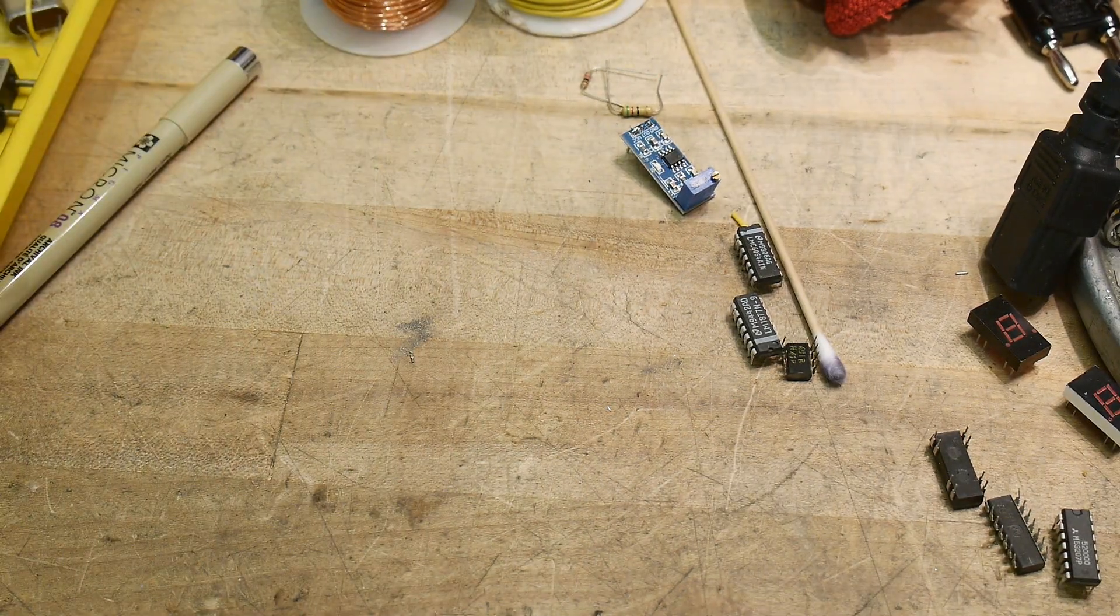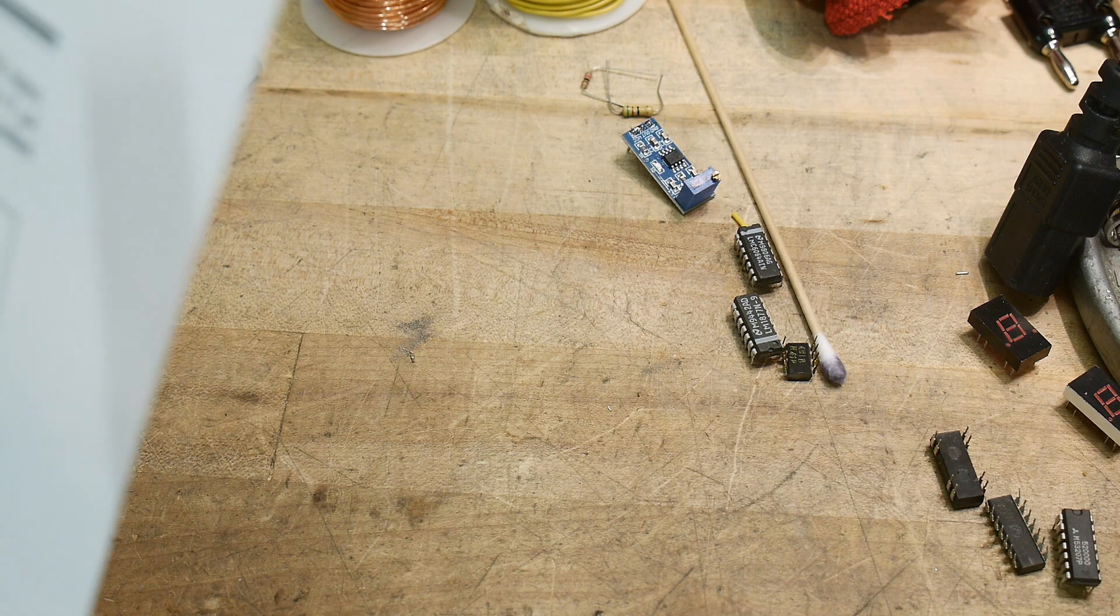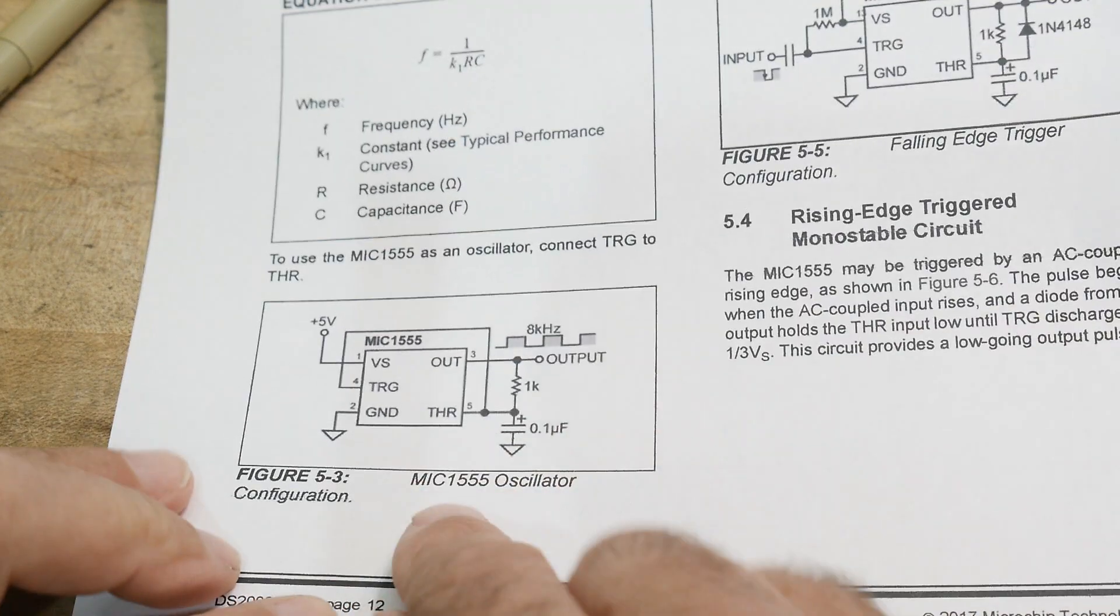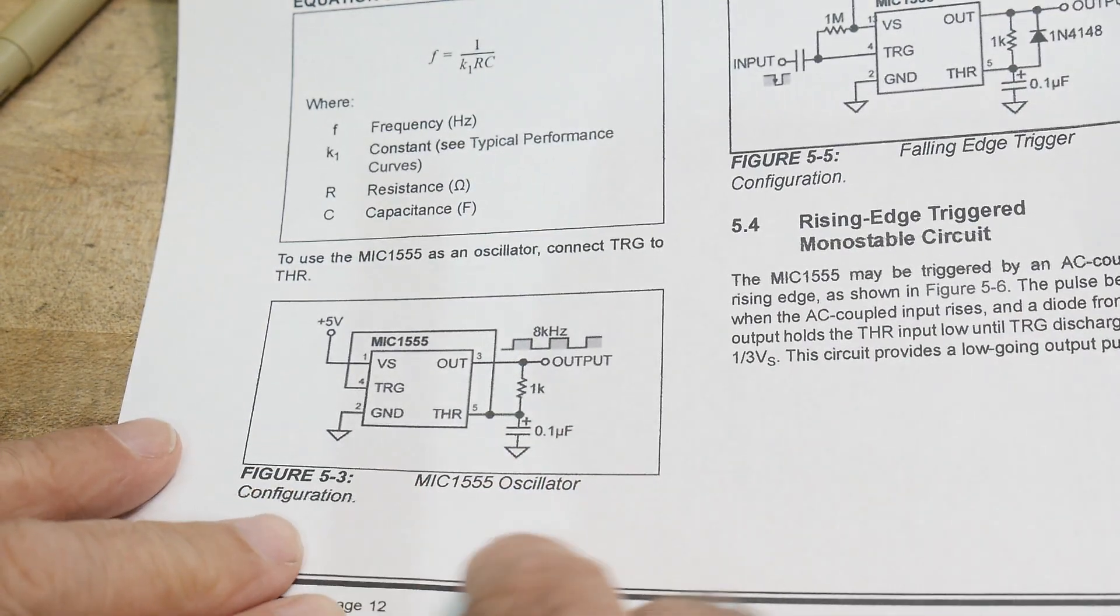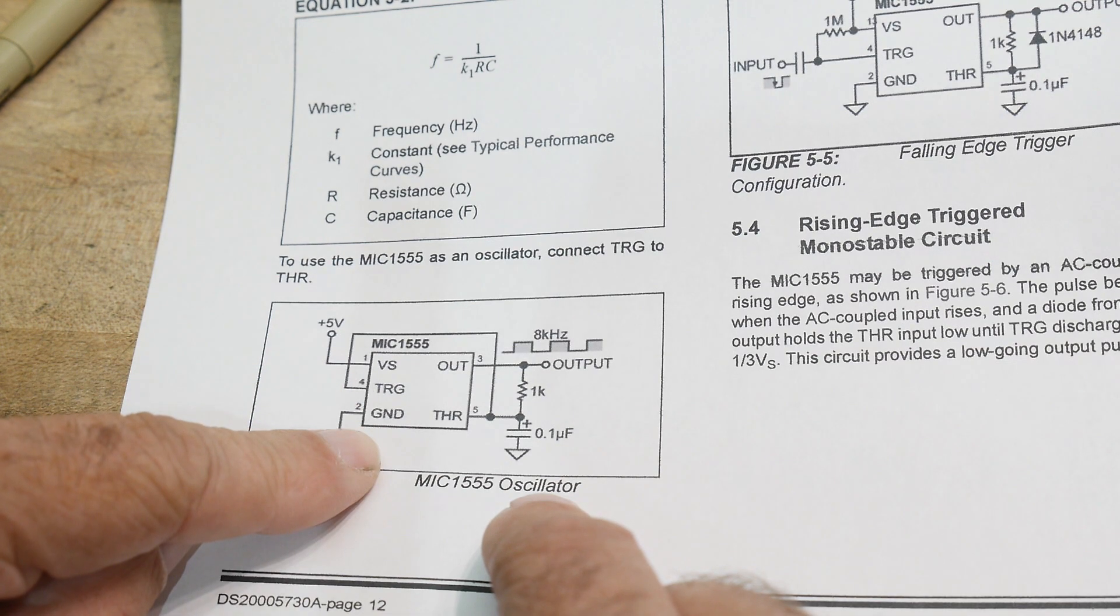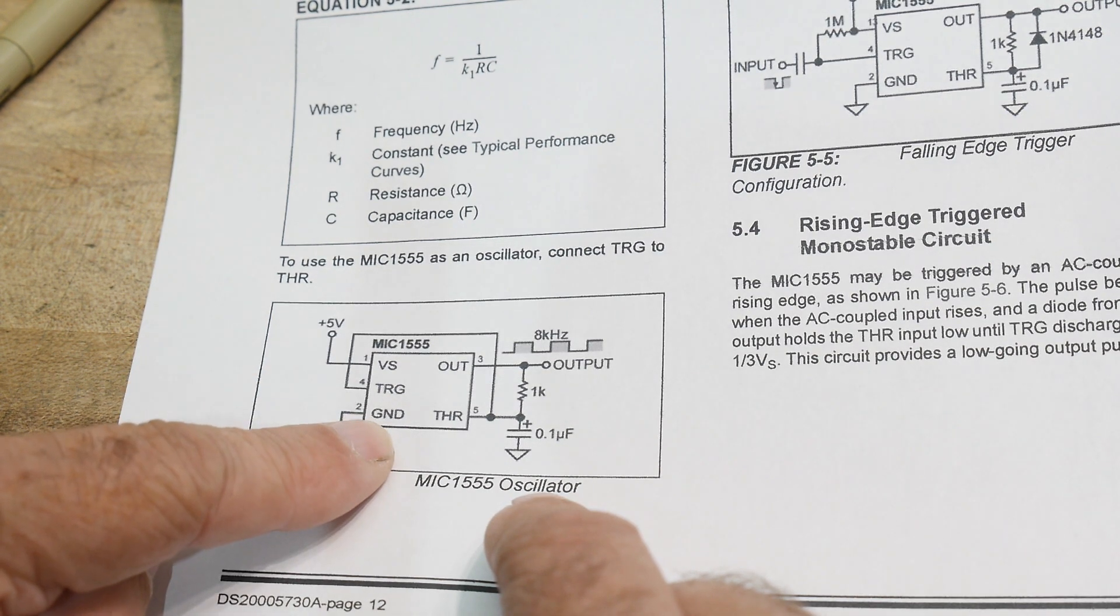All right. So I'm going to hook up one circuit here. We will be hooking up this circuit right here. It is an oscillator. So we have five volts and ground, pins one and two.